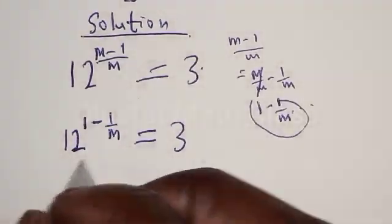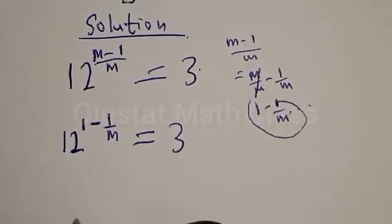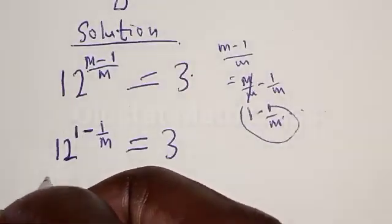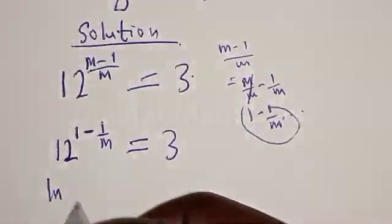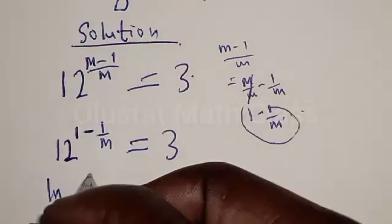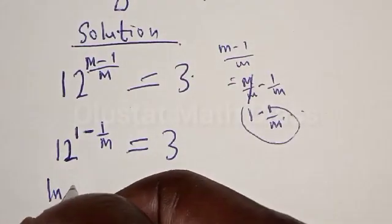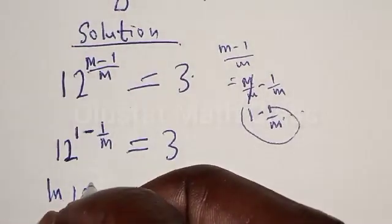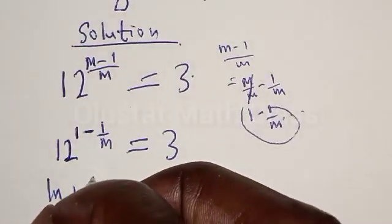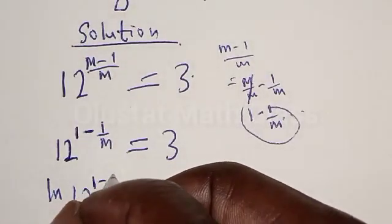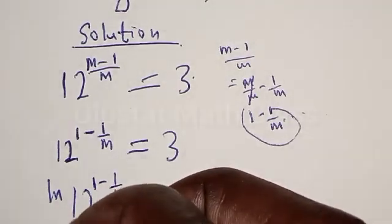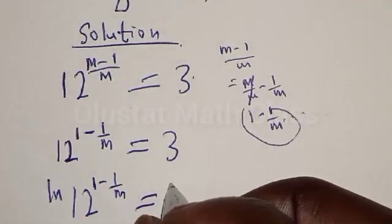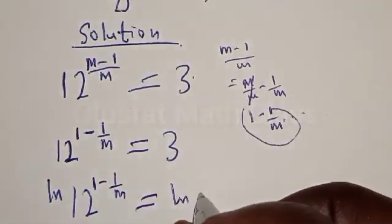So then, let's take the log of both sides. We have natural log of 12 raised to power (1 minus 1 over m) equal to natural log of 3.